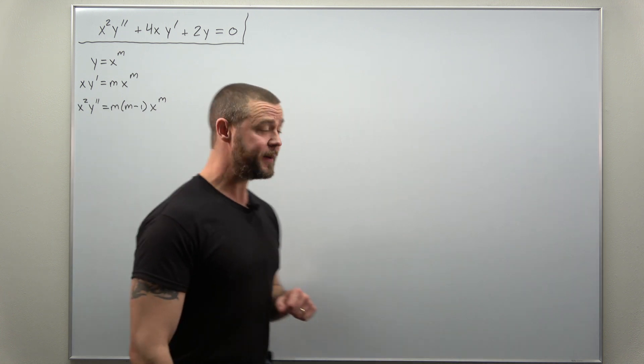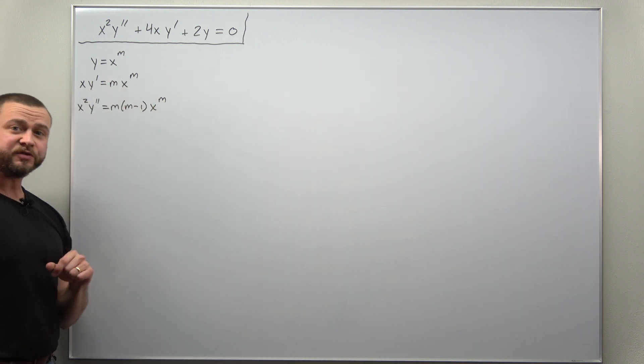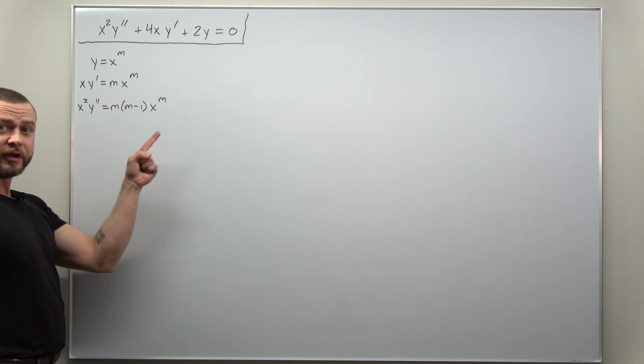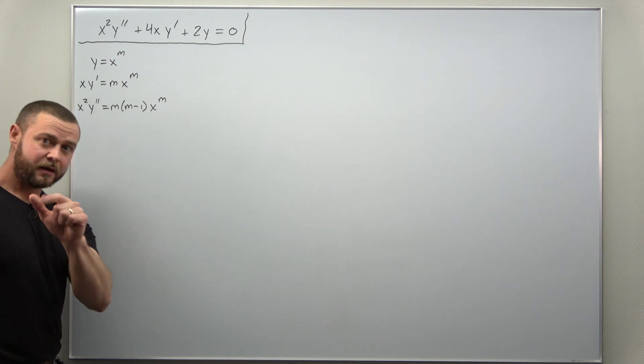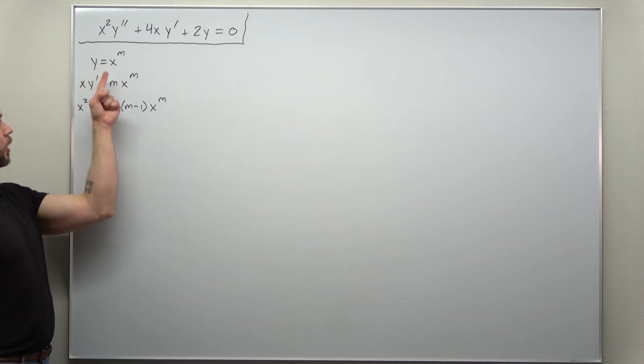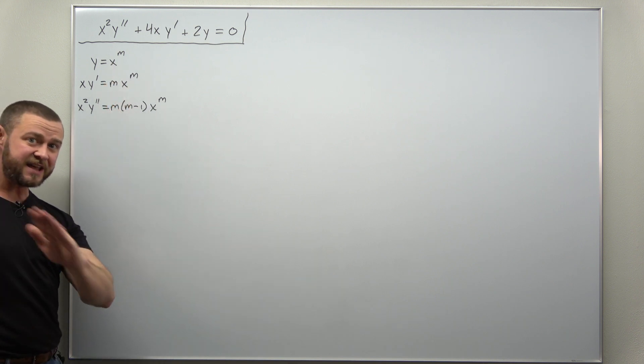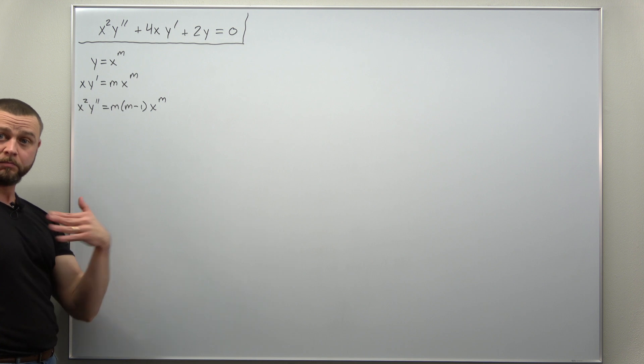Provided you know your fundamentals. For a Cauchy-Euler equation we start with y equals x to the m. Calculate your derivatives, but the first derivative and second derivative get multiplied by powers of x that match the order of the derivative. All three of these quantities are the same for every Cauchy-Euler equation, so make sure you know them.